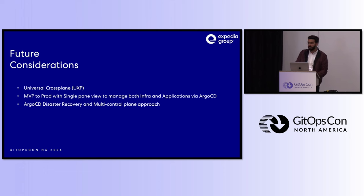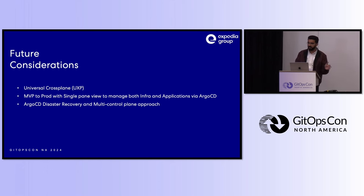For future considerations, we've started exploring Universal CrossPlane, which is the next version of CrossPlane and still open source. We're also looking at how to get a single pane of view to manage both frontend applications via Argo CD and eventually have all 500 plus clusters and 10,000 plus apps deployed by Argo CD. We're also figuring out solutions for Argo CD disaster recovery and a multi-control-plane approach. Currently it's a single Argo CD instance managing all target clusters, and we're doing POCs on whether to install Argo CD on both the control plane and on target clusters — an Argo CD managing Argo CD kind of approach.